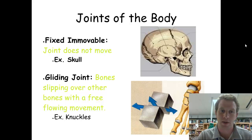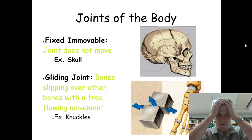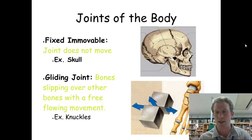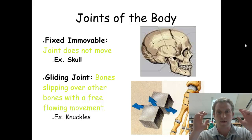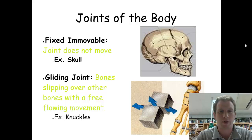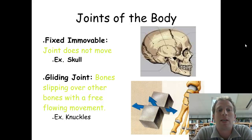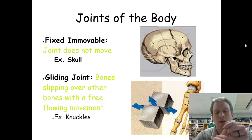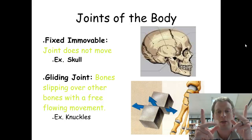Next we have the fixed immovable joint — the joint doesn't really move. On our skull, it may feel like it's one solid piece, but there are actually a couple of different parts to it, and those parts don't move. Imagine if your skull could bend and move in all sorts of directions — you'd be concussing yourself left and right. Another type is the gliding joint. The bones slip over each other with a free-flowing movement. Your knuckles are an example — fairly free-flowing, you can get them moving in different directions.